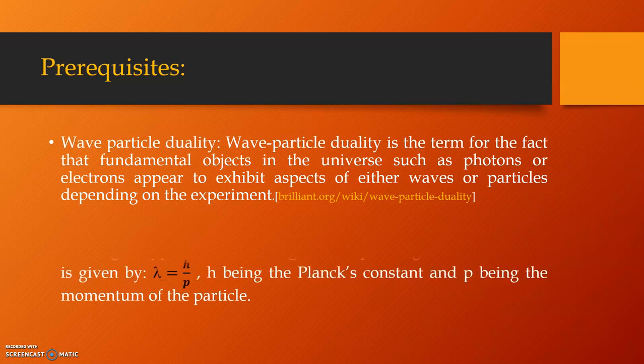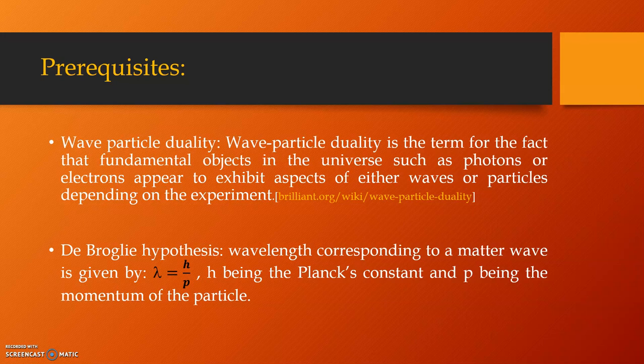The second point which we need to remember is the de Broglie hypothesis. As per de Broglie hypothesis, every matter or particle has a wave associated to it which we call as matter wave and the wavelength corresponding to this wave is given by h by p, h being the Planck's constant and p being the momentum of the particle.